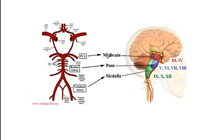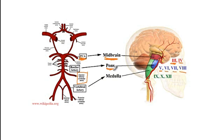To review: the midbrain houses cranial nerves 3 and 4, the pons has cranial nerves 5, 6, 7, and 8, and the medulla has cranial nerves 9, 10, and 12. The posterior cerebral artery supplies the midbrain, so problems with it affect cranial nerves 3 and 4. The basilar artery — more specifically the AICA branch — supplies the pons, housing cranial nerves 5, 6, 7, and 8. The medulla is supplied by two arteries: the vertebral artery via the PICA branch supplies cranial nerves 9 and 10, while the anterior spinal artery supplies cranial nerve 12 at the lower portion of the medulla.